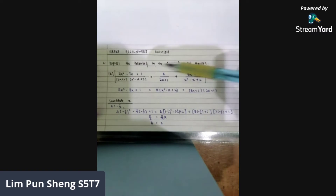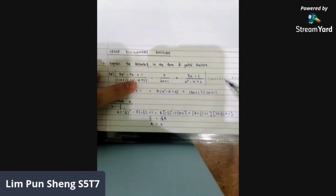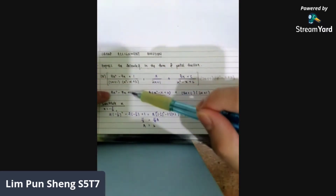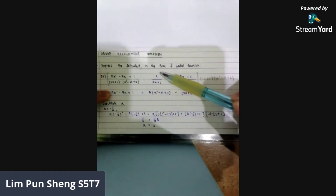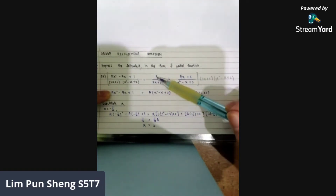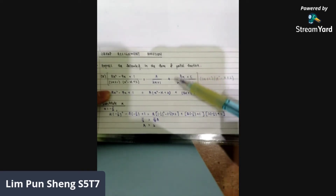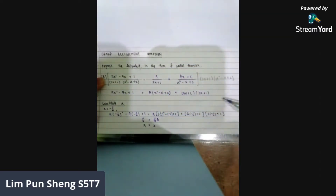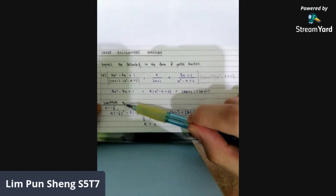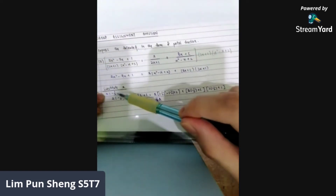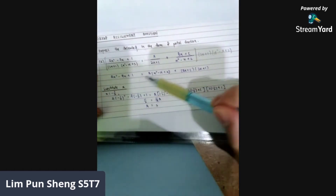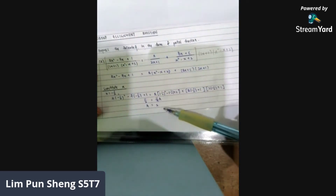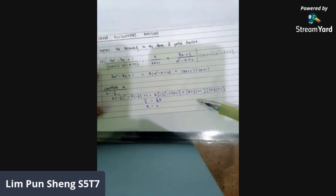The second step is multiplying the whole equation by (2x + 1) and (x² − x + 2). For the first fraction, we cancel out both, leaving 4x² − 7x + 1. For the second fraction, we cancel out (2x + 1), leaving a multiplied by (x² − x + 2). For the third fraction, we cancel out, leaving (2x + 1) multiplied by (bx + c). After getting the whole equation, we substitute x with negative 1 over 2. After calculation, we get the value of a equals 2.